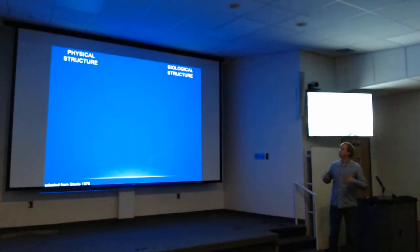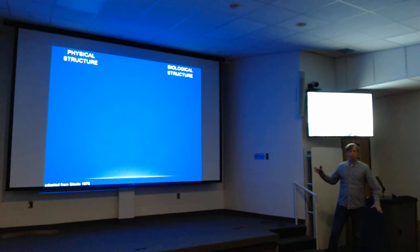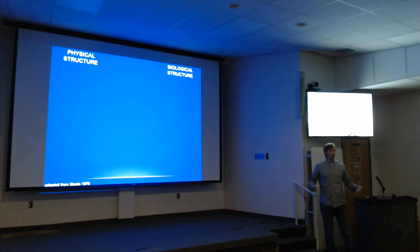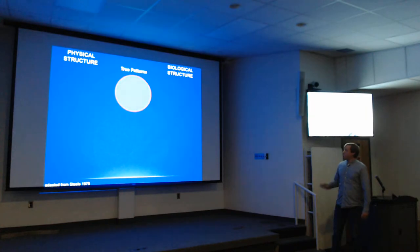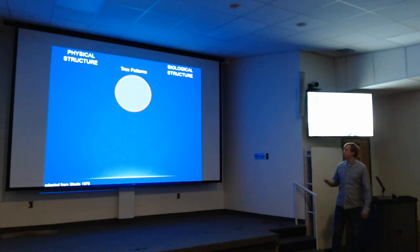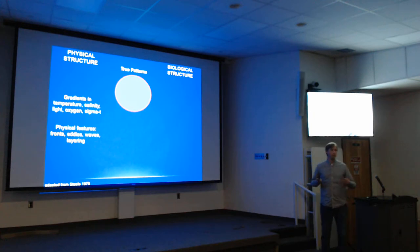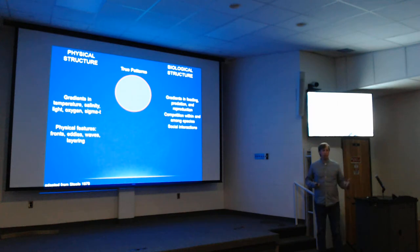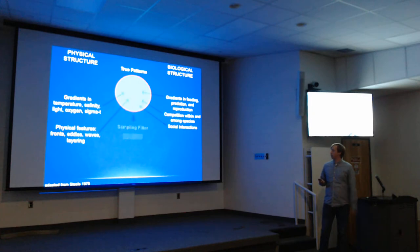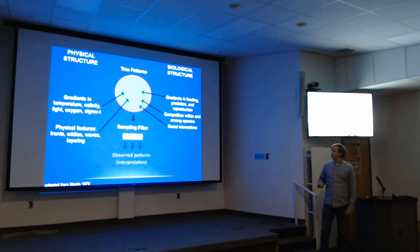When we think about patterns of plankton in time and space, we have to consider any pattern as a product of physical structure introduced by the environment, and then the biological structure introduced by the life history of organisms and their interactions. On the physical side, you have gradients in oceanographic properties, features like fronts and eddies, layering, and internal waves. On the biological side, there are gradients in feeding, predation, reproduction, competition, and social interactions.